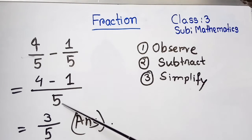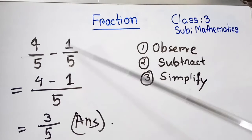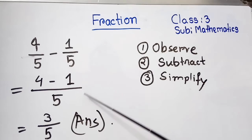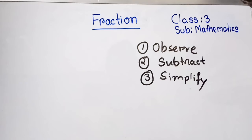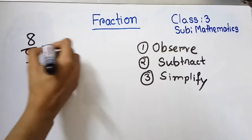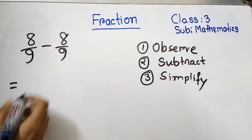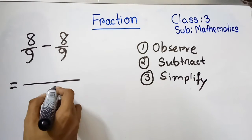We subtract only the numerators: 4 minus 1 equals 3, and the answer is 3/5. We do not need to simplify this one. Now let's solve another problem: 8/9 minus 8/9. Observe — the denominators are the same, so we write nine here.